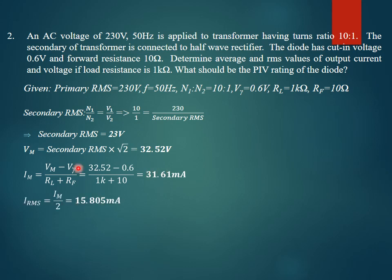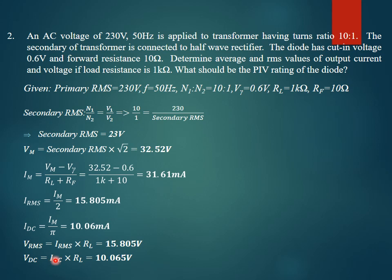With Im found, the RMS current is Im / 2 = 15.805 mA, and the DC current IDC = Im / π = 10.06 mA. VRMS is obtained by multiplying IRMS by RL, and VDC by multiplying IDC by RL. The peak inverse voltage rating of the diode must be greater than Vm, since when reverse biased, the maximum voltage across the diode is Vm. Therefore, the PIV rating must be just above 32.52 volts.